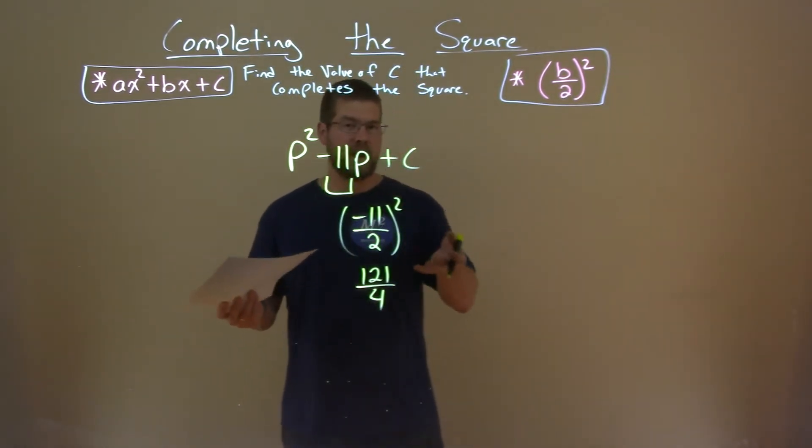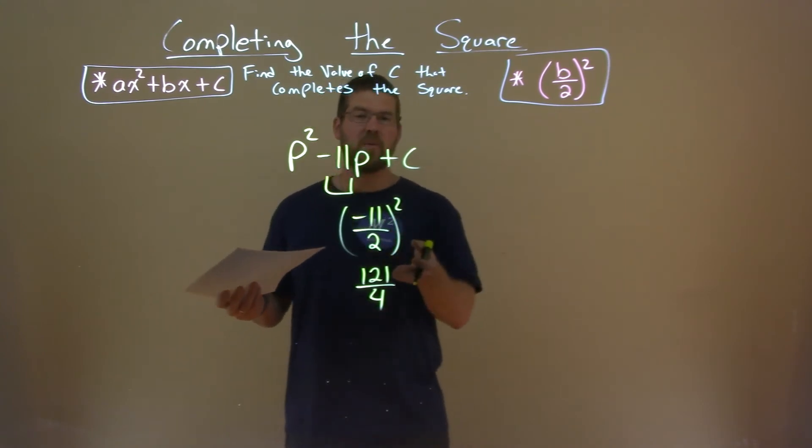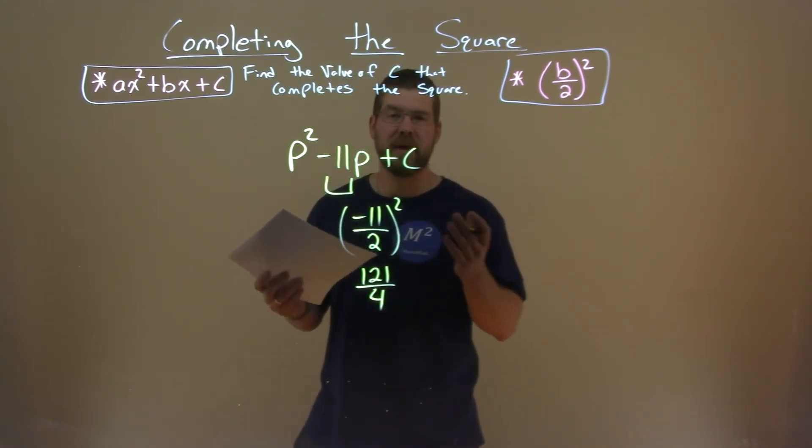So now we have it in fraction form, 121 over 4, and that's the c value that completes the square.